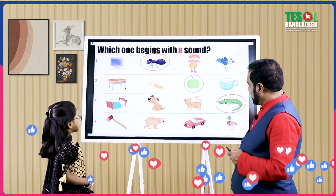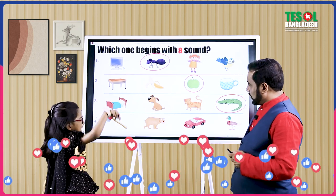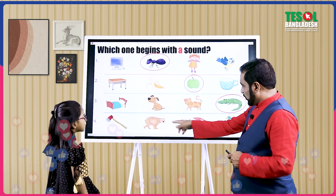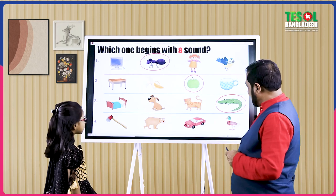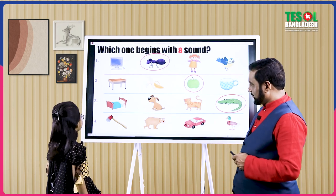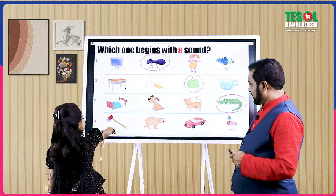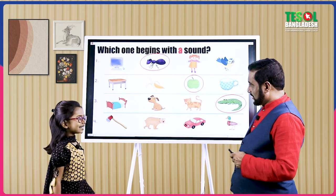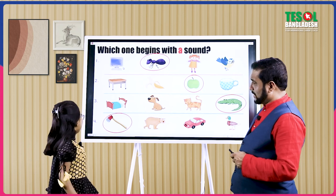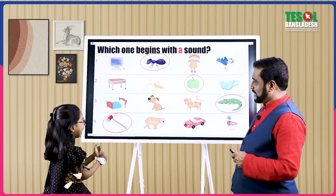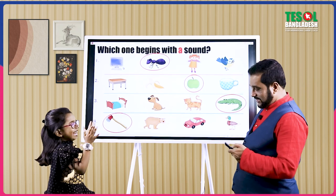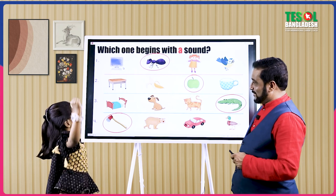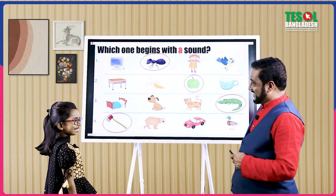You got three. One — the last one, four. Which one begins with A sound? Axe. Are you sure? Yeah. Let's check. You are right. I won! You won? Okay.